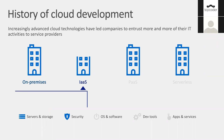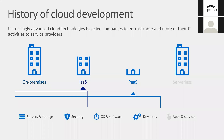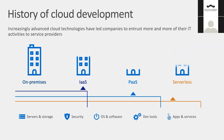With IaaS you still managed the OS, software, and developer tools. PaaS gave you the flexibility where OS manageability, dev tools, and everything is managed through the PaaS layer. Serverless is an interesting concept from the compute perspective — you are only managing your apps and services, providing your app to the cloud service provider, and the rest is taken care of by the provider.